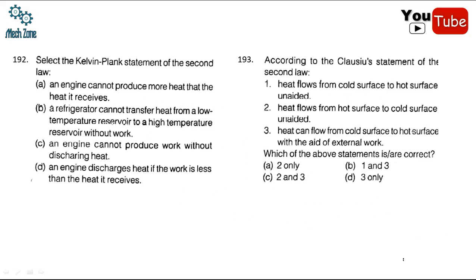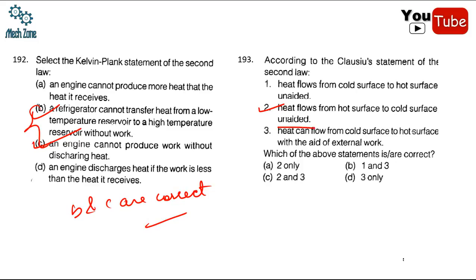Selecting the Kelvin-Planck statement of the second law: statement B — 'a refrigerator cannot transfer heat from a lower temperature reservoir to a higher temperature reservoir without work' — is correct. Statement C — 'an engine cannot produce work without discharging heat' — is also correct. Therefore B and C are correct. For question 193: heat flows from a hot surface to a cold surface unaided (true), and heat can flow from cold to hot with the aid of external work (true). Statement 1 is incorrect. Correct answer is C (statements 2 and 3).